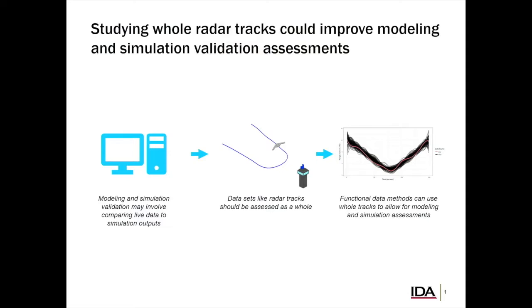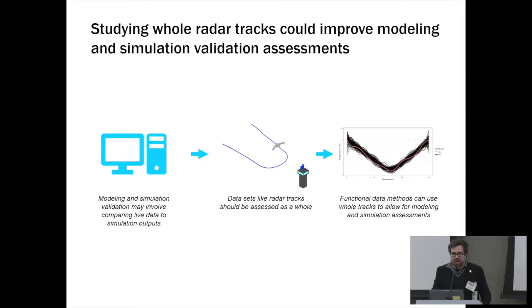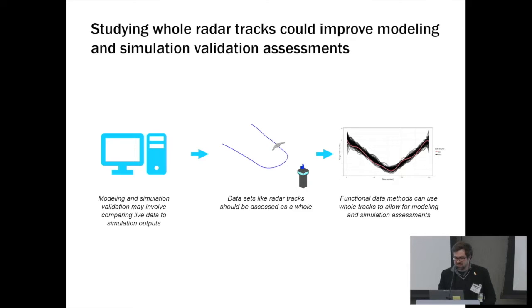We're going to be focusing largely on M&S concerning radar tracks, where maybe we are studying an object flying through space and tracking it with a radar track, or maybe we're talking about a radar system itself being modeled in an M&S system. When we're doing modeling and simulation, that validation may involve comparing live data to simulation outputs to determine whether the M&S is giving us believable outputs. Data sets such as radar tracks probably need to be assessed as a whole — looking at the entire track as a continuum. Functional data methods can use whole tracks, allowing for their use in modeling and simulation assessments.